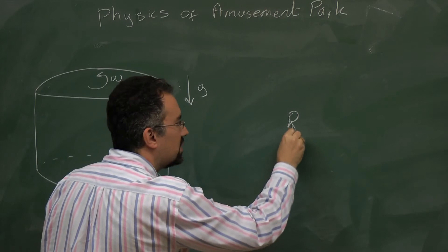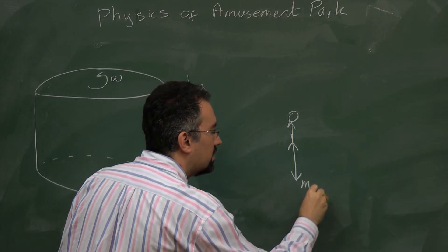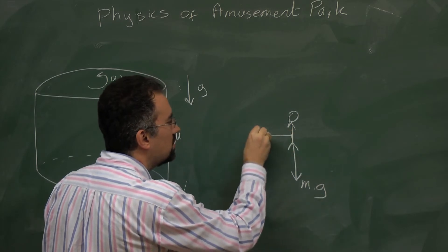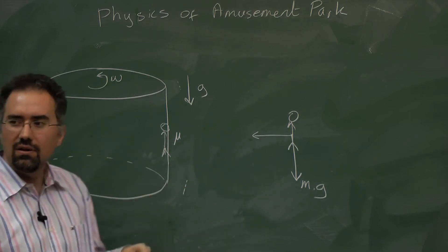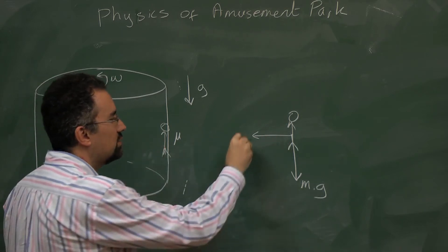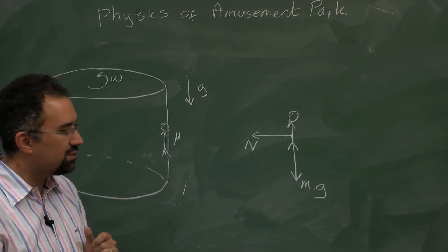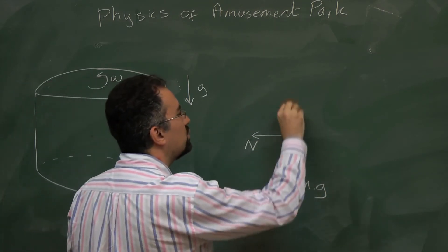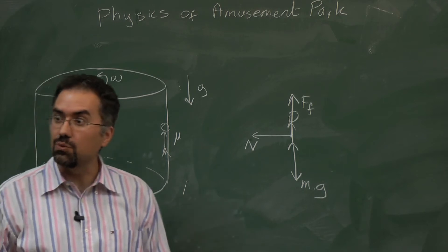We need the free body diagram of this person. What forces are acting on them? First, there is mass m times g acting downward. There is also the normal force, pointing toward the center of the cylinder — that's the position the person is in. There is also a friction force; otherwise the person would just fall down, so the friction force will try to resist the falling.